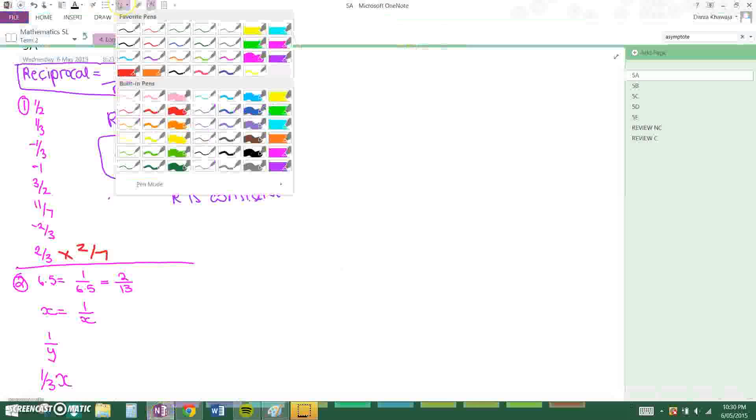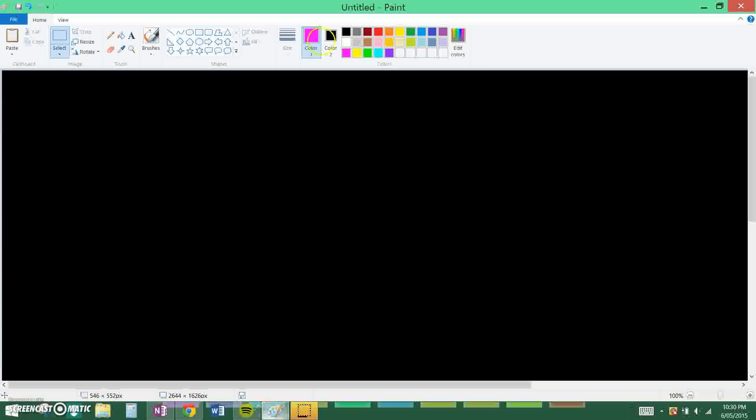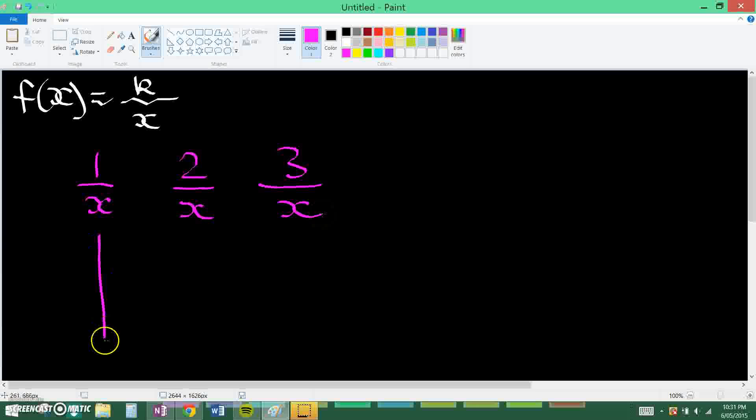So basically reciprocal functions are the most basic rational functions. f(x) equals k divided by x where k is constant. Now basically if you take a few examples, say 1 over x, 2 over x, 3 over x, the graphs will all look like this, right?